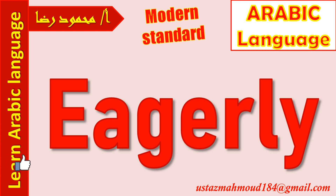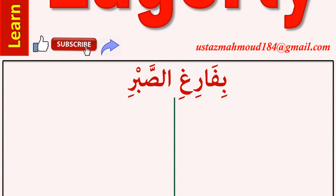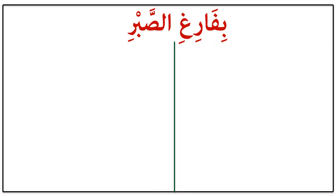Please don't forget to like this video, subscribe to the channel, and share this video with your friends — I'll be grateful, as it will help me gain more views and reach more people. Thank you. Now let's see what 'eagerly' means in Arabic. It means بفارغ الصبر (bifari al-sabr) — something you can't wait for. Please look at the first sentence.